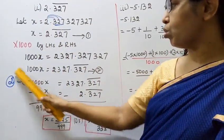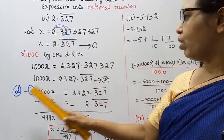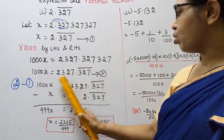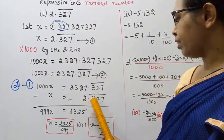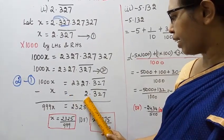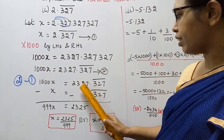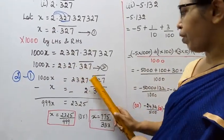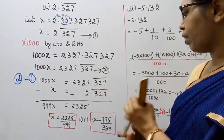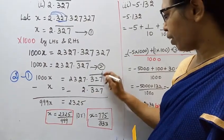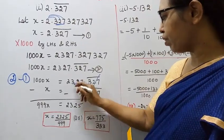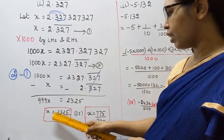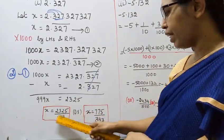Equation 2 minus equation 1. 1000x minus x. 2327.327 bar minus 2.327 bar. 327 bar cancels. 7 minus 2 is 5, 2 minus 3, 3 minus 2. Subtract: 1000 minus 1 is 999. 999x equals 2325.